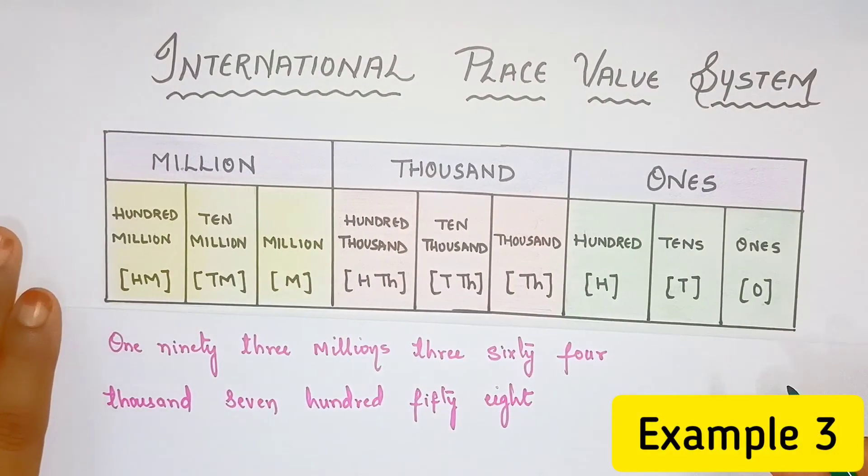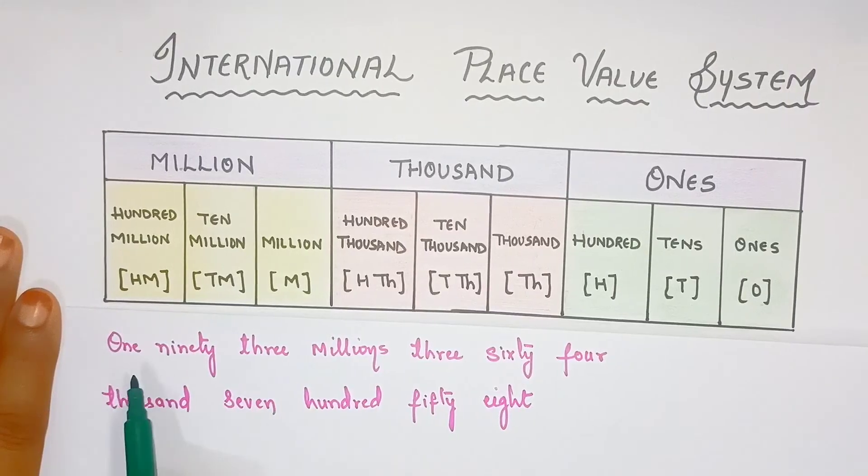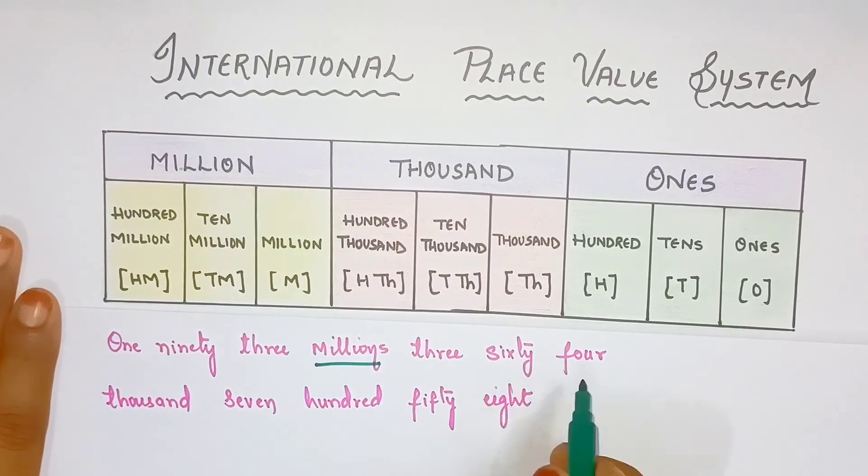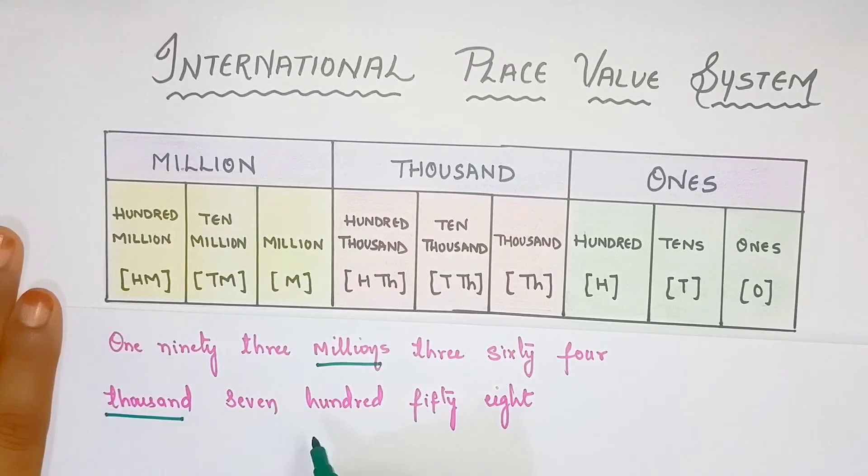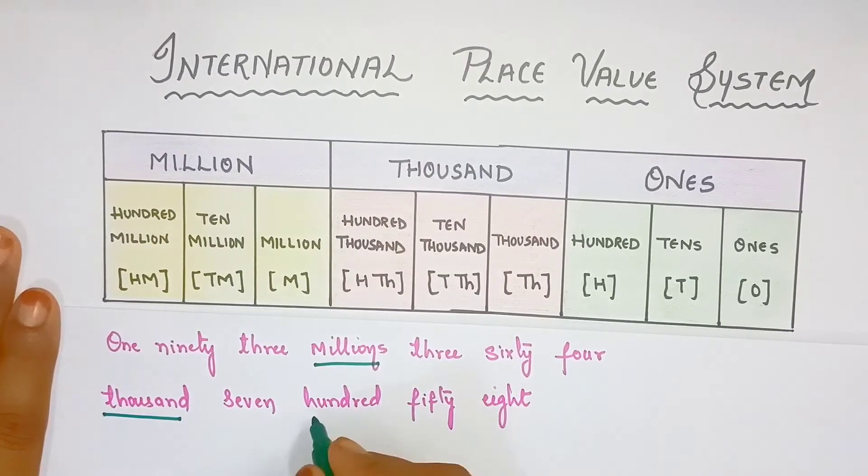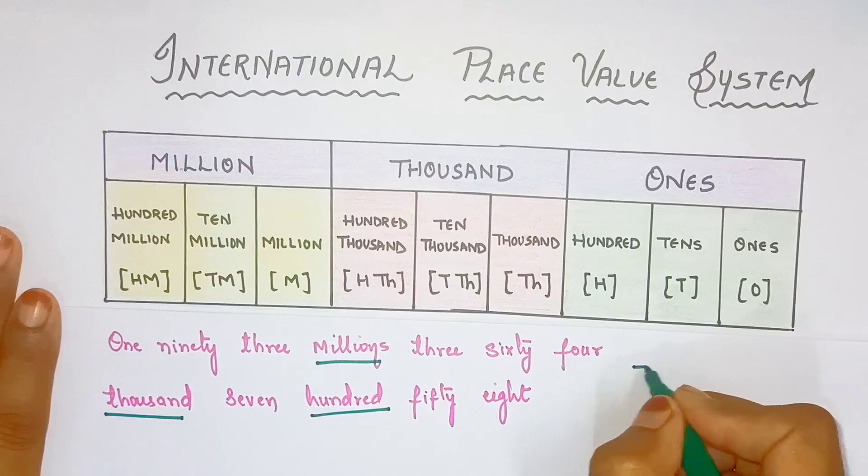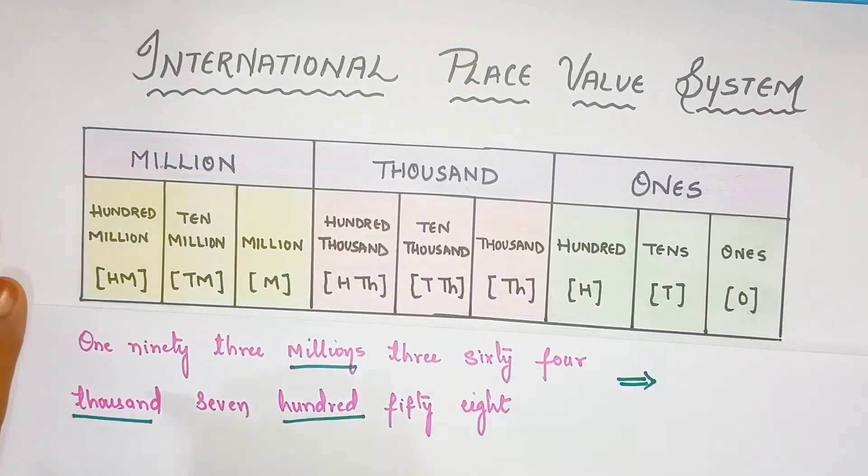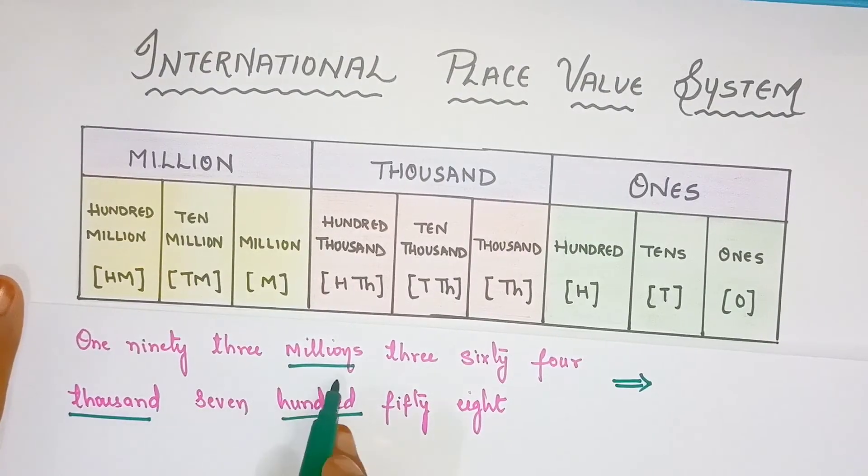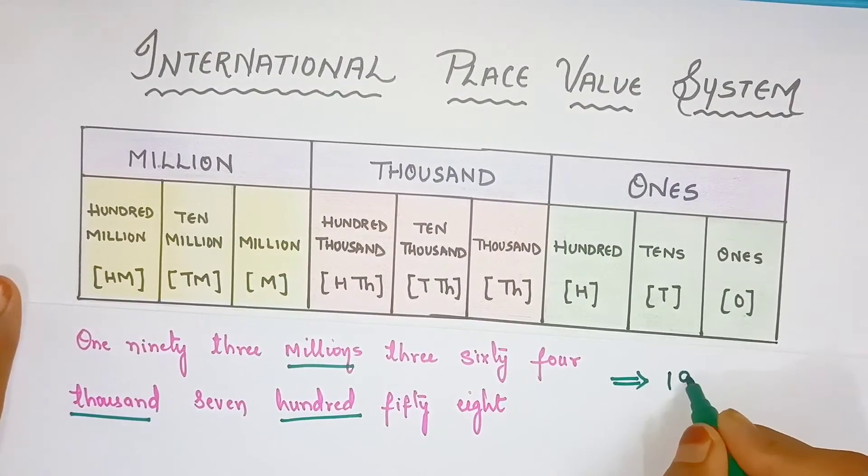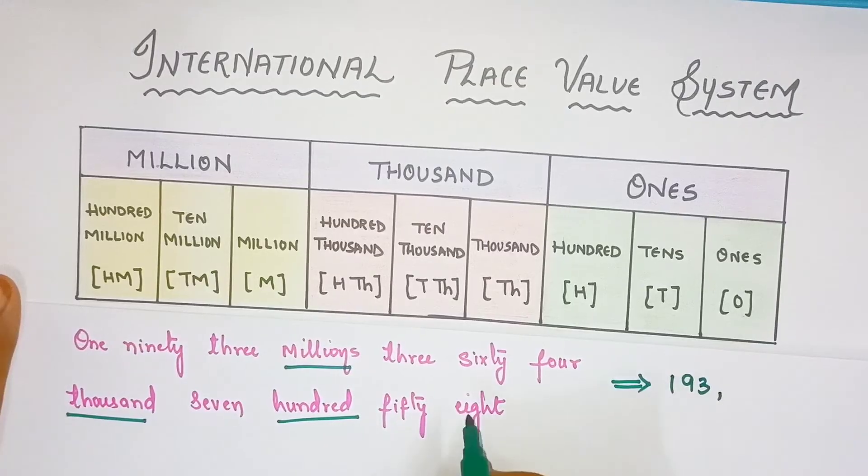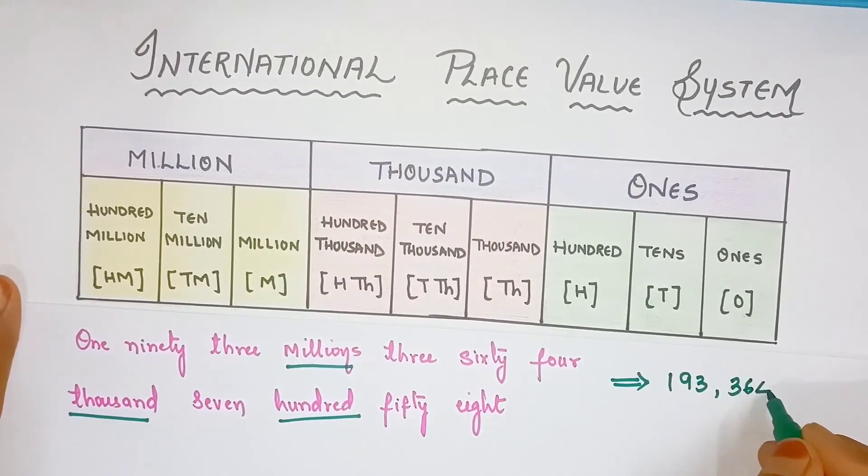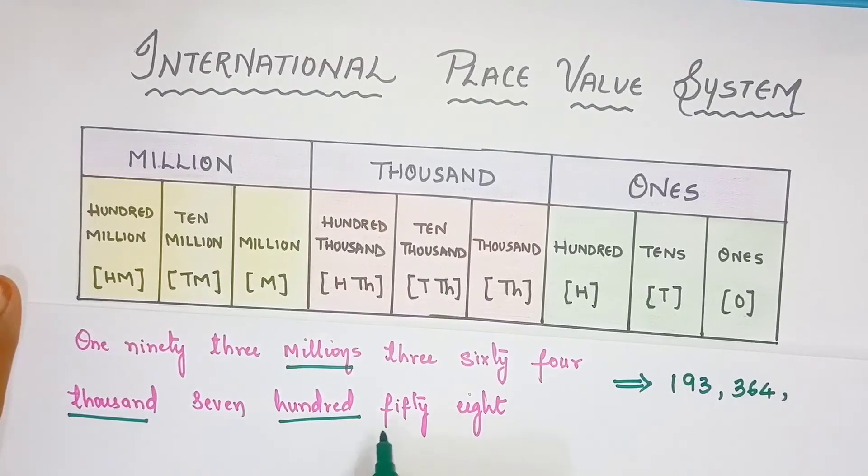Now, let's take another example. Here, it's written 193 million, 364 thousand, 758. Here, the number will be very simple. So, our number will be 193,364,758.